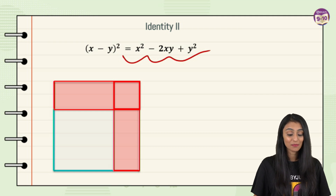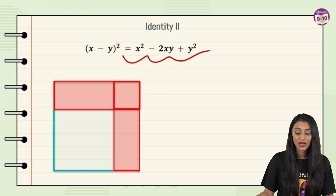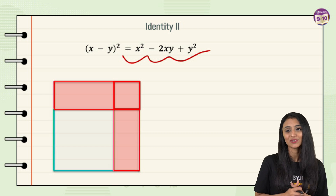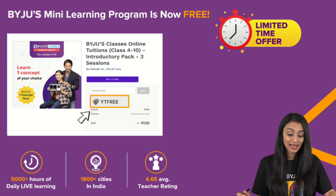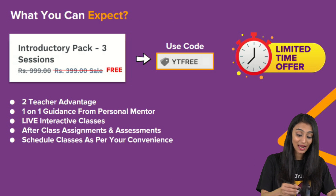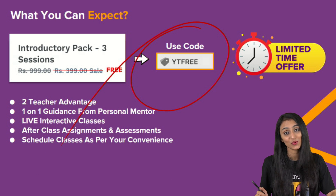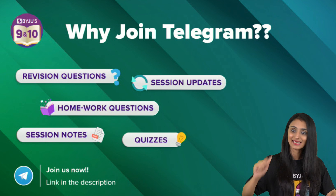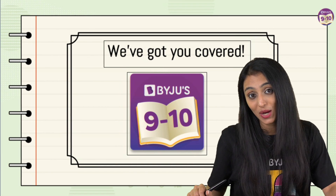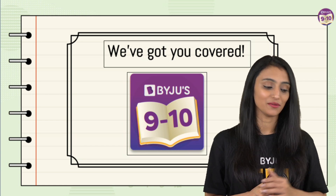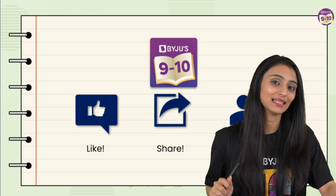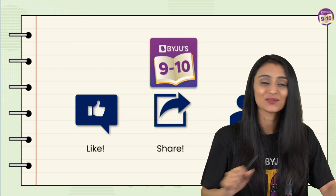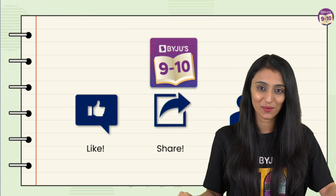Today we have actually visualized these two identities — how they come about — rather than just memorizing them. Don't forget to check the link in the description and use the code YT FREE to avail the offer. Join the Telegram channel, hit the like button, share with your classmates, and subscribe so you don't miss any new sessions from Monday to Friday. Thank you, bye!